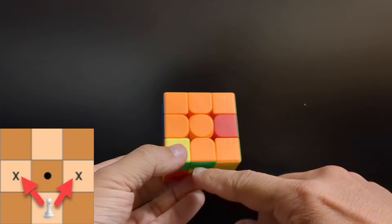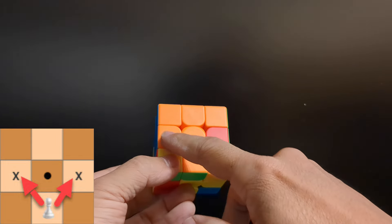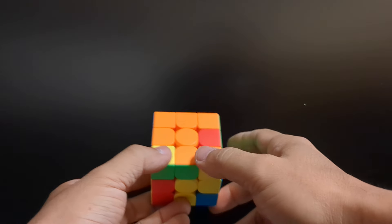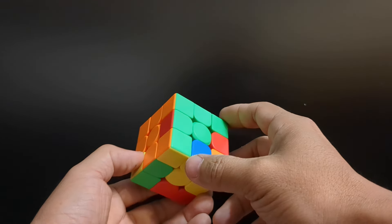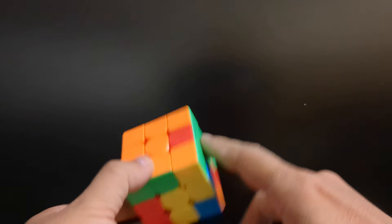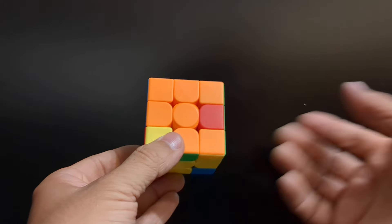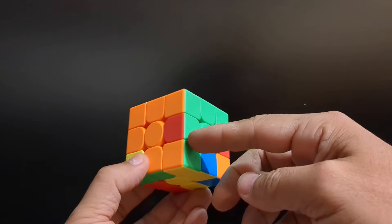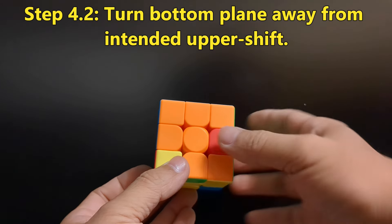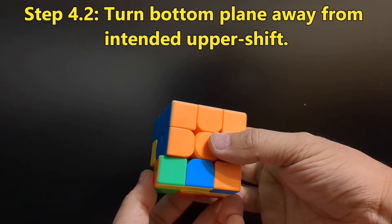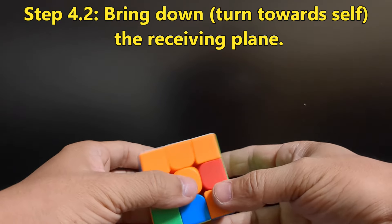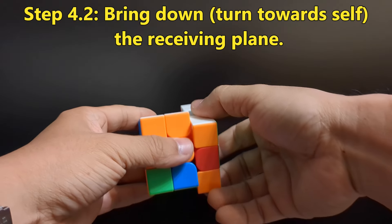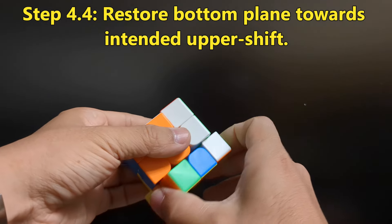That move brings this upward. We have orange and green right here. We're going to do the same thing but in an opposite step. We want to go upper right, so we turn it towards the left, bring this side down, and bring it back up.